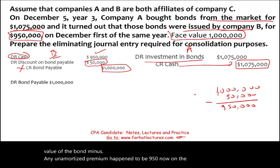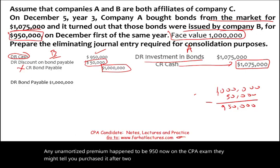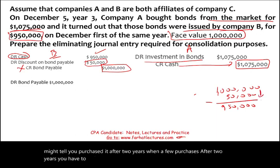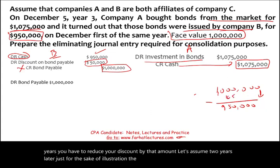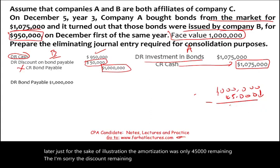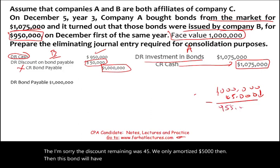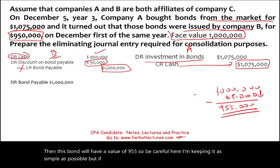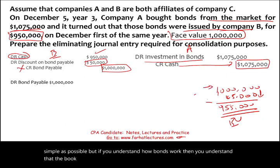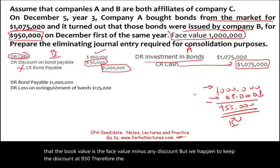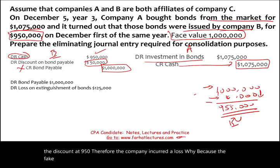Be careful — keeping it simple here. If you understand how bonds work, the book value is the face value minus any discount. We're keeping the discount at $50,000, so the book value is $950,000. The company incurred a loss because the book value is $950,000 and we purchased the bond for $1,075,000 — resulting in a loss of $125,000. That loss goes to the income statement.